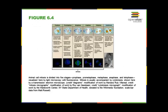Animal cell mitosis is divided into five stages — some sources divide it into four, essentially combining the first two. Your particular textbook teaches five phases. In prophase, the chromosomes condense and become visible. Spindle fibers start to emerge from the centrosomes, forming the beginning of the mitotic spindle. The nuclear envelope breaks down and the nucleolus disappears.